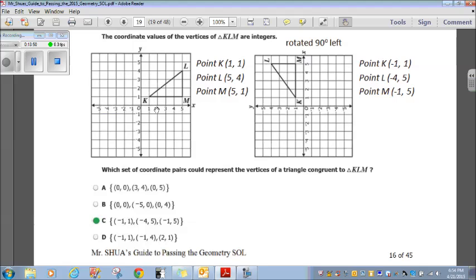Okay, in our original here, point K is at 1 and 1, point L is at 5 and 4, point M is at 5 and 1. Now, all I did was I just made another copy of that diagram, and then I rotated it 90 degrees to the left. So, if we look now, just rotating it 90 degrees to the left,